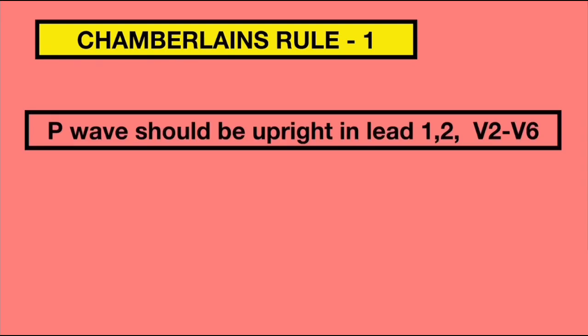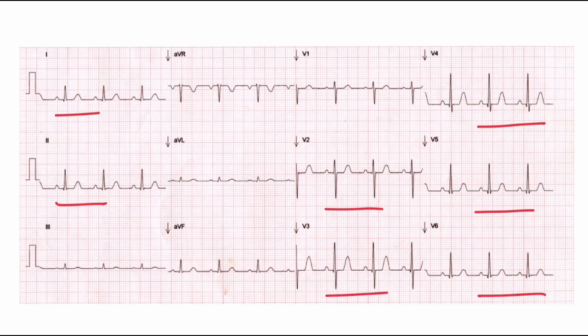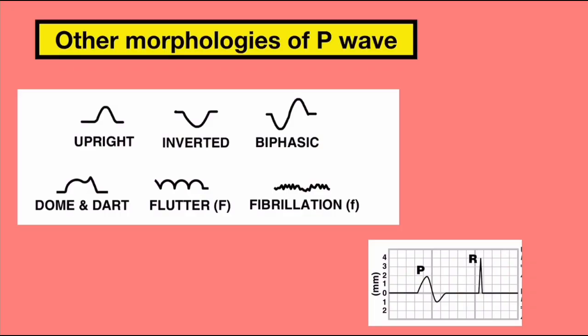Rule 1 states that the P wave should be upright in leads 1, 2, and V2 to V6. In the ECG, we can see that all P waves are upright in these leads. You should also learn that there are other morphologies of P wave which can be seen as abnormal findings in these leads, such as inverted, biphasic, dome and dart, flutter, and fibrillary waves.